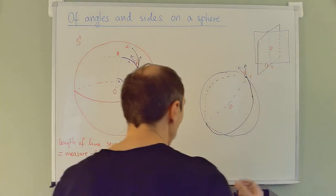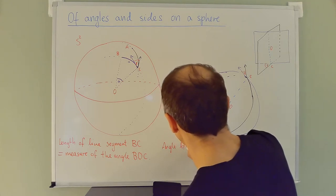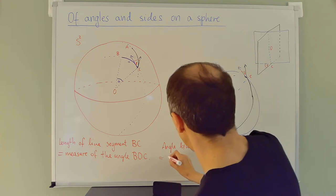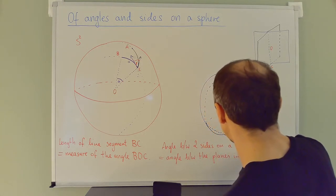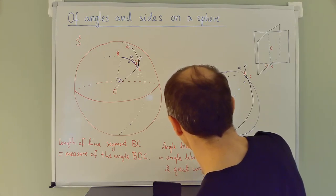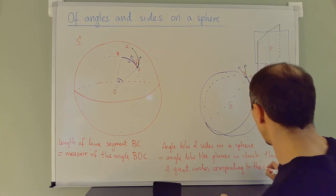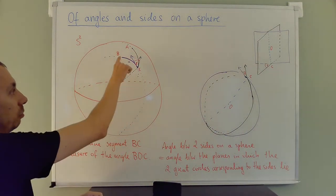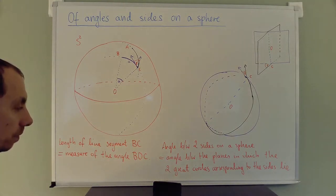So one conclusion is: the angle between two sides on a sphere is the same as the angle between the planes in which the two great circles corresponding to those sides lie. So angle gamma is the same as the angle between the purple great circle and the black great circle, which equals the angle between the two planes containing these great circles.